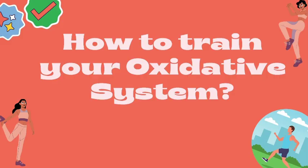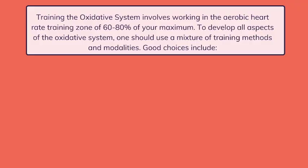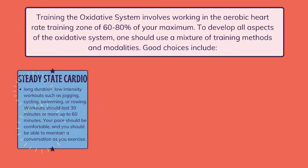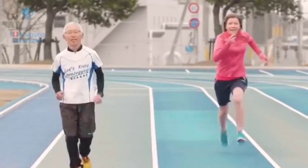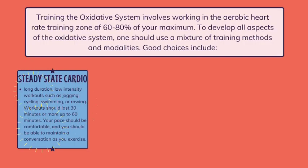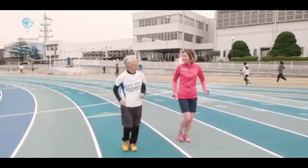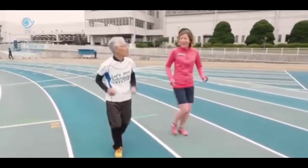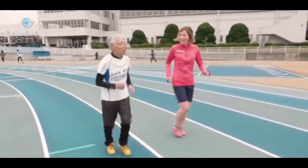How to train the oxidative system? Training the oxidative system involves working in the aerobic heart rate training zone of 60–80% of your maximum. To develop all aspects of the oxidative system, one should use a mixture of training methods and modalities. Good choices include: Number 1, steady state cardio, which means long duration, low-intensity workouts such as jogging, cycling, swimming, or rowing. Workouts should last 30 minutes or more, up to 60 minutes. Your pace should be comfortable and you should be able to maintain a conversation as you exercise.